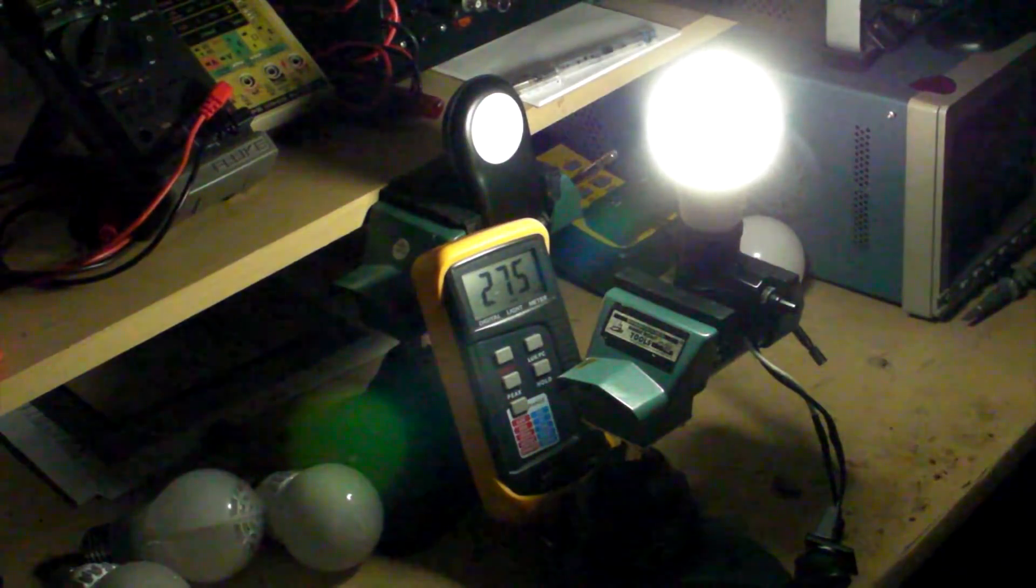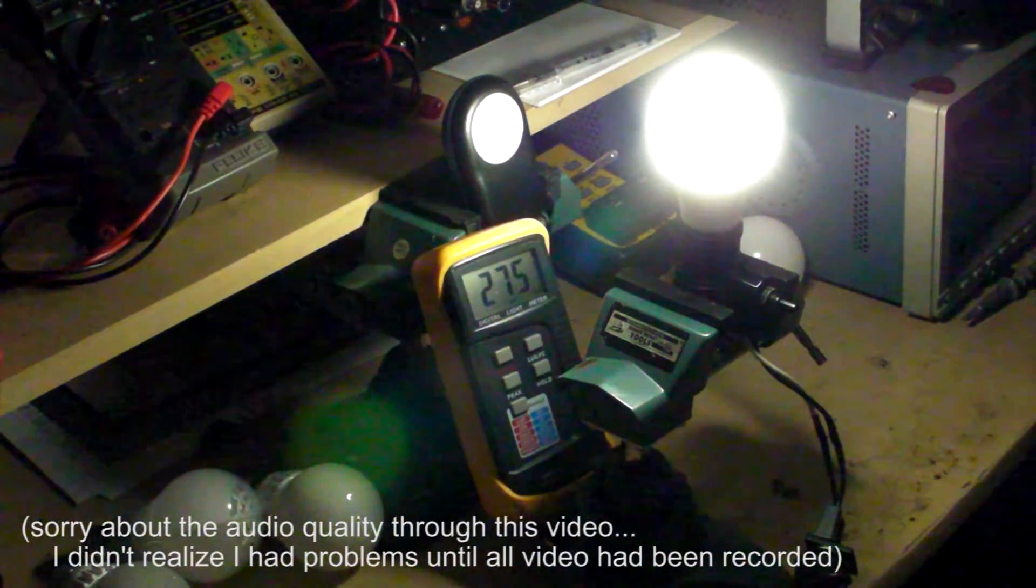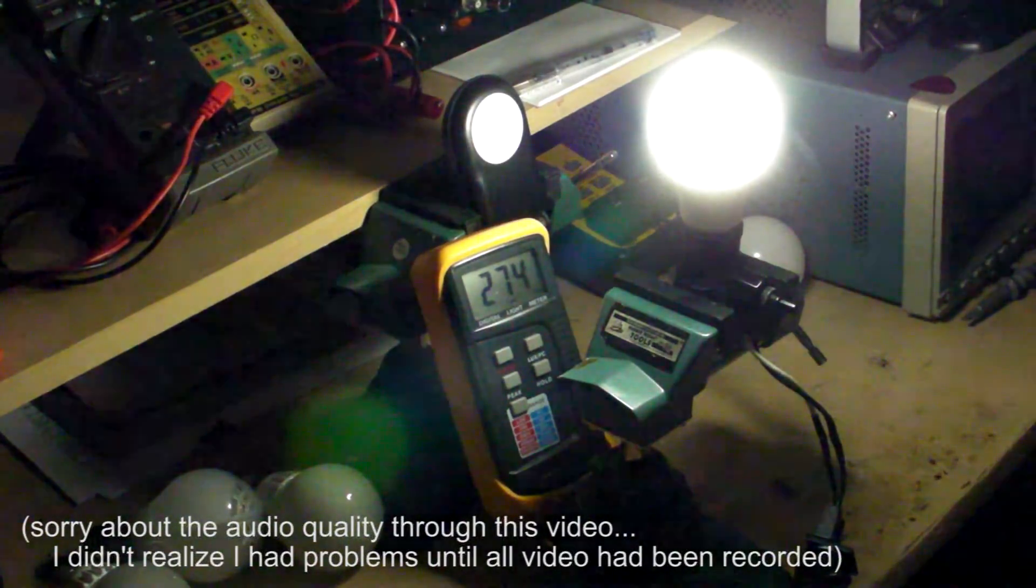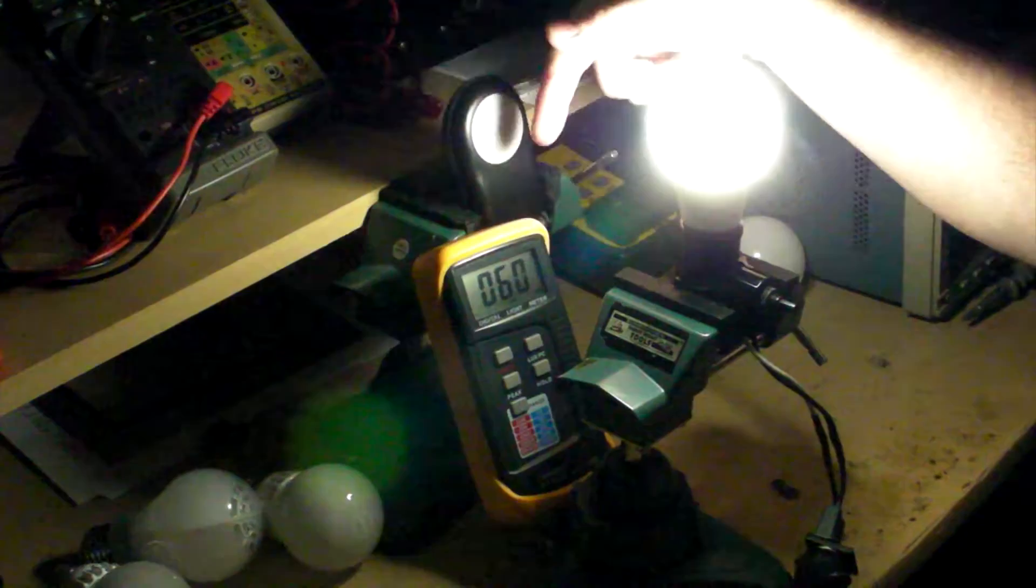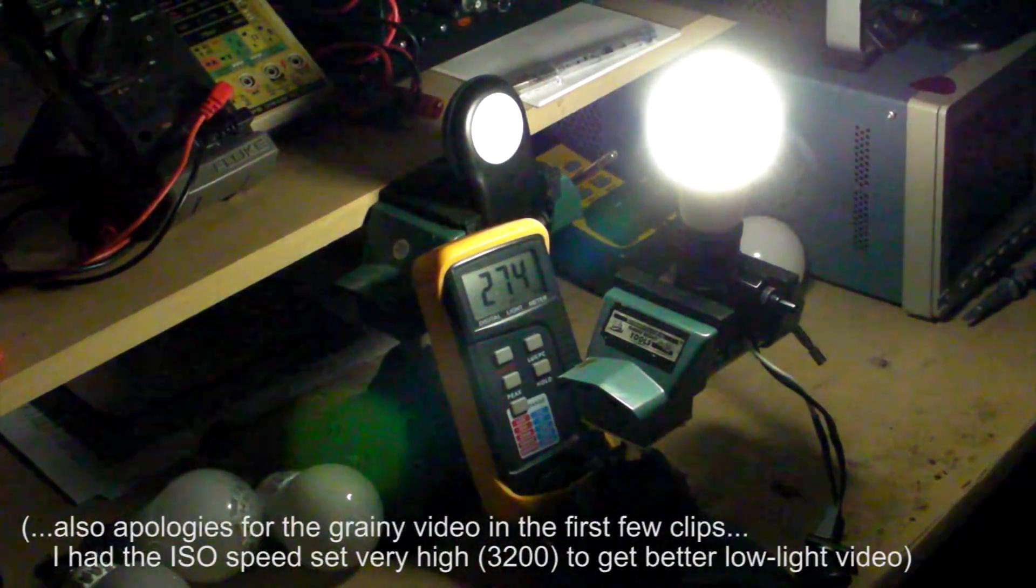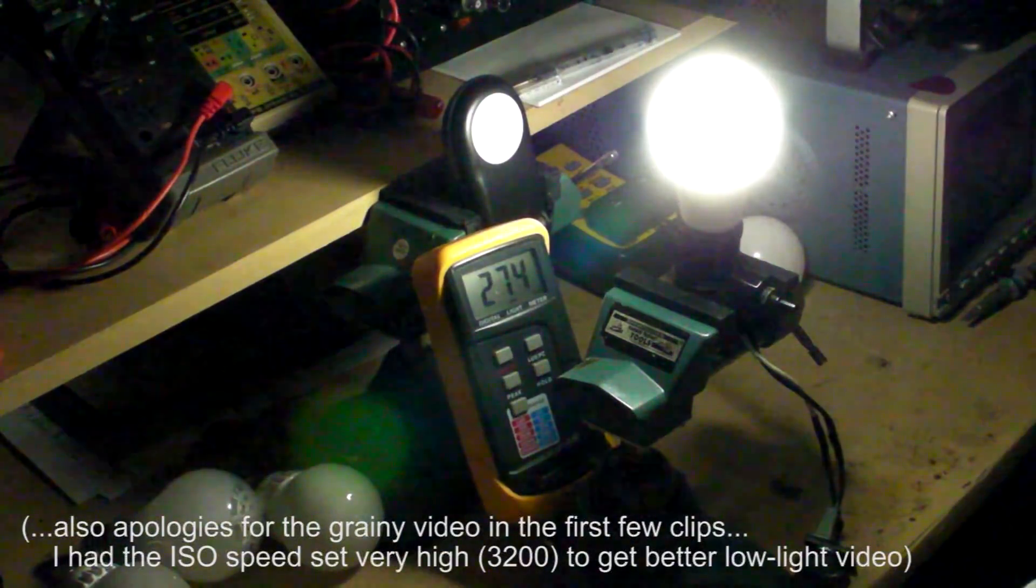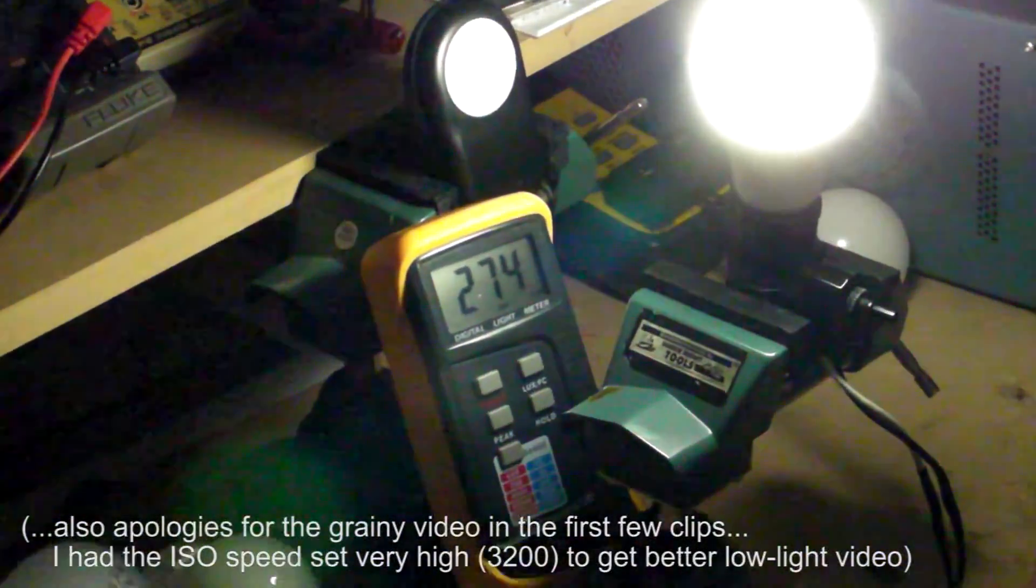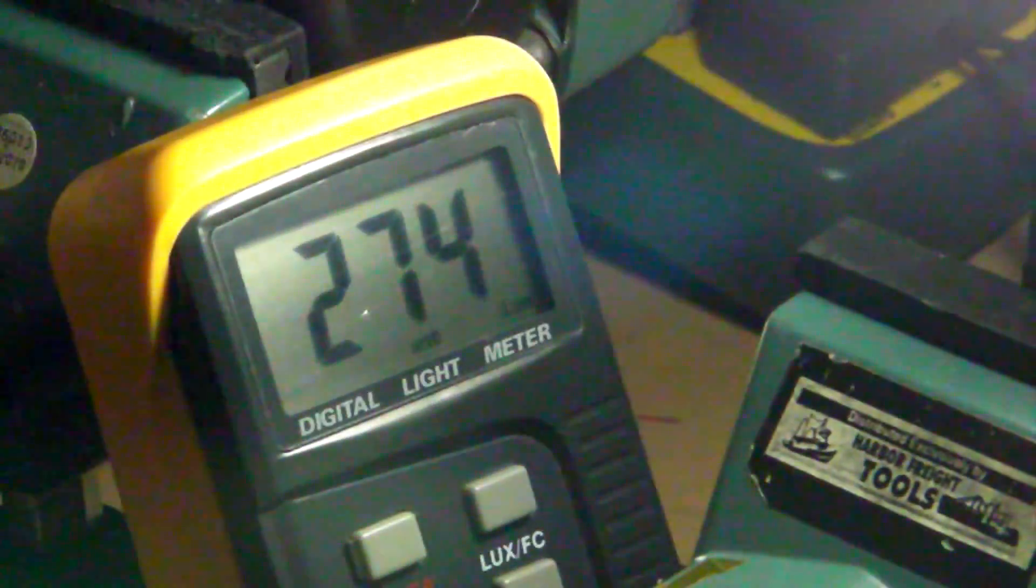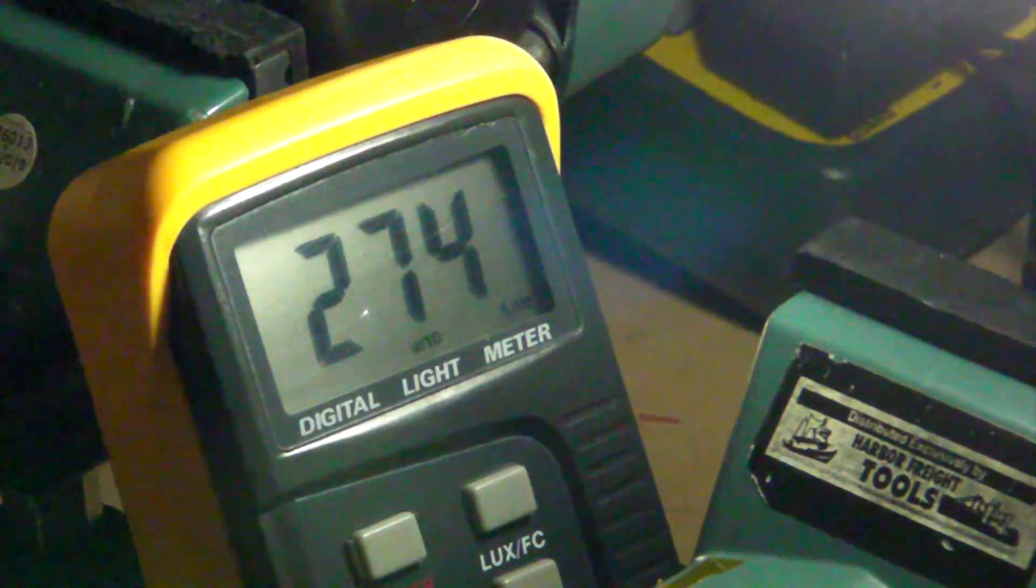Now I'm going to do a brightness range test on just a standard incandescent lamp dimmer. Behind the lamp, I've got my light sensor set up. Right now, you can see at full brightness, reading 2,740 lux. That's full brightness.